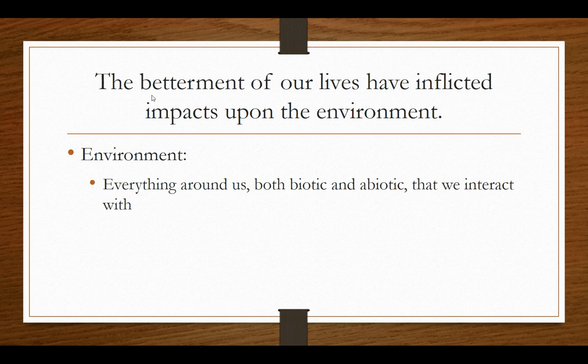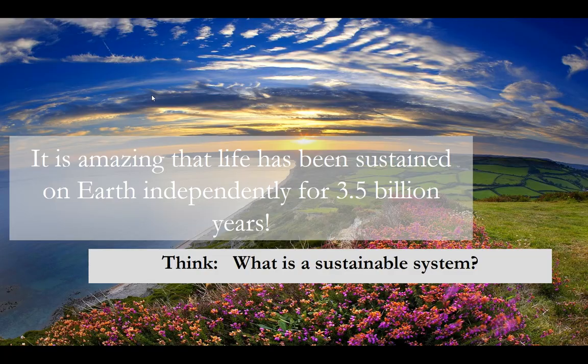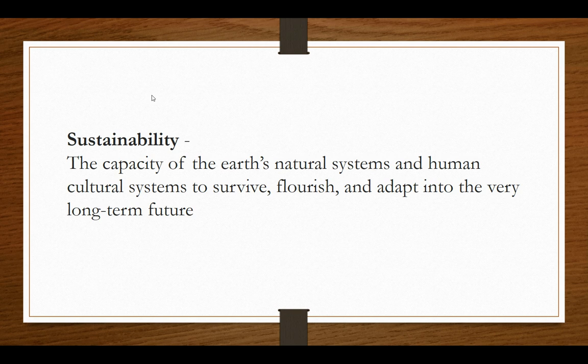We rely upon our environment, and the environment is everything around us — both biotic and abiotic — that we interact with every day. Biotic refers to living things; abiotic refers to non-living things. This environment has been sustained for 3.5 billion years, making it a sustainable system. Sustainability is the capacity of Earth's natural systems to survive, flourish, and adapt in the long-term future.